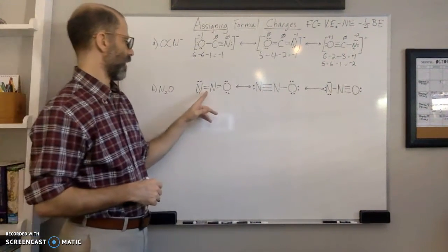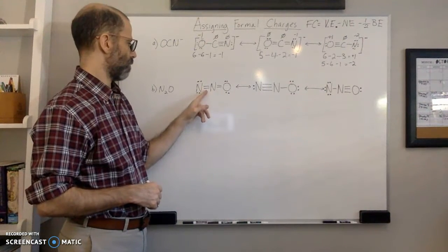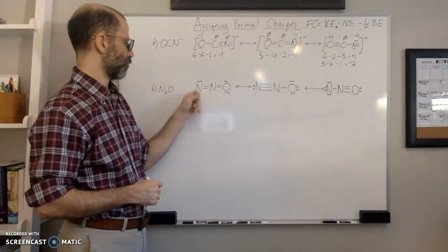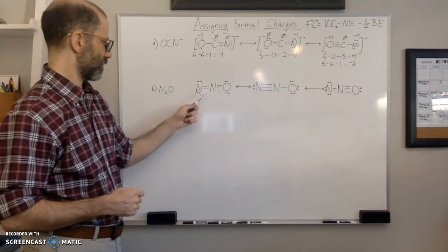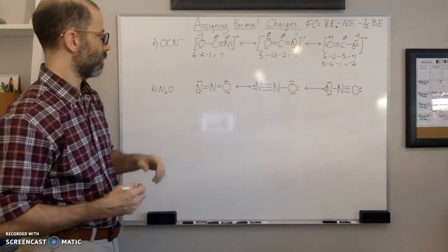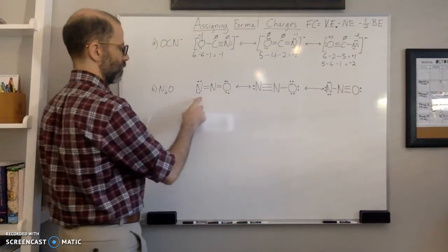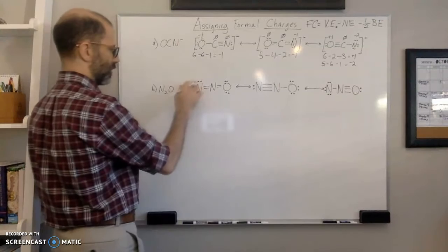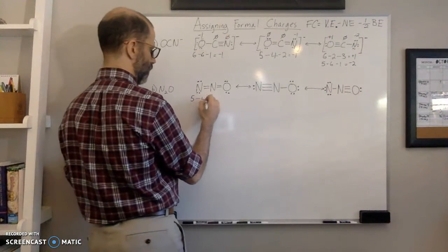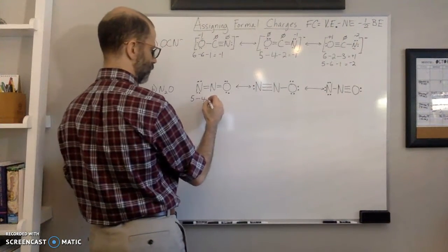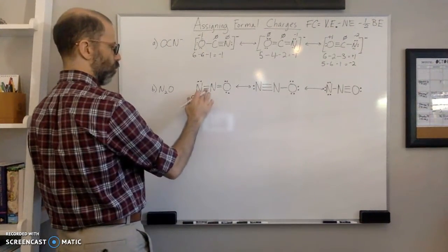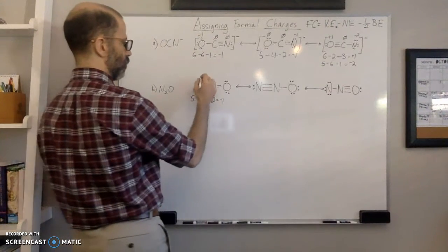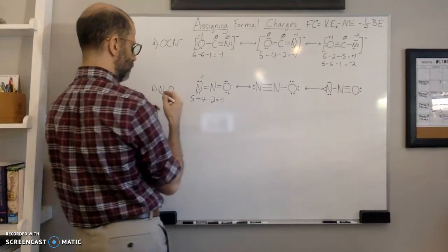So here we have two bonds and two lone pairs on this nitrogen. This does not fit the bonding pattern of nitrogen, so we expect a formal charge. If we calculate it: five valence electrons for nitrogen (group 5), minus four non-bonding electrons, minus one from each of two bonds — that gives us negative one. So the formal charge is negative one.